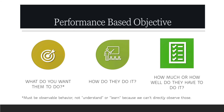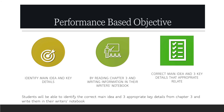For example, you don't want to say 'the students will learn how to identify the main details,' because we can't see learning. Use a verb that you can actually see. For instance: 'Students will be able to identify the correct main idea and three appropriate key details from Chapter 3 and write them in the Writer's Notebook.' The condition is reading Chapter 3 and writing in the Writer's Notebook, and the criteria is having the correct main idea and three key details that appropriately relate to it.